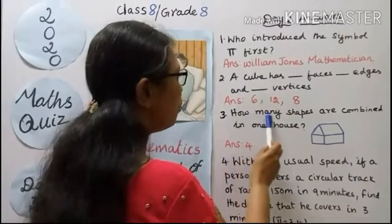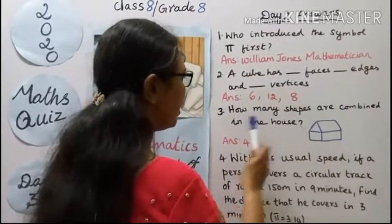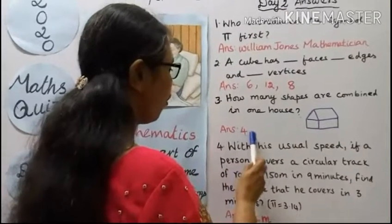Third question, how many shapes are combined in one house? Answer: 4.